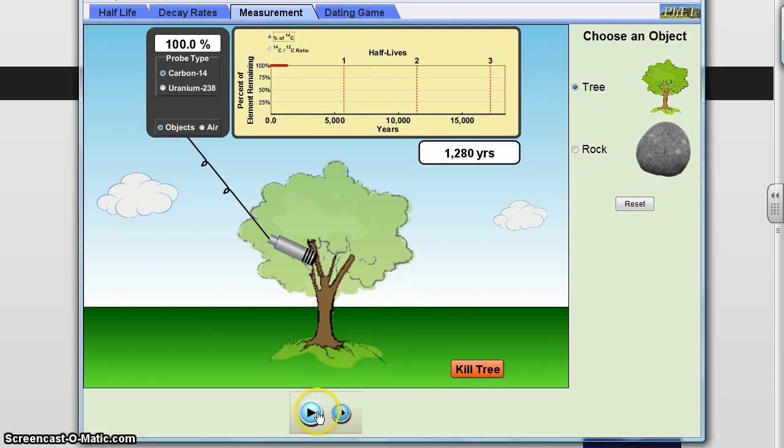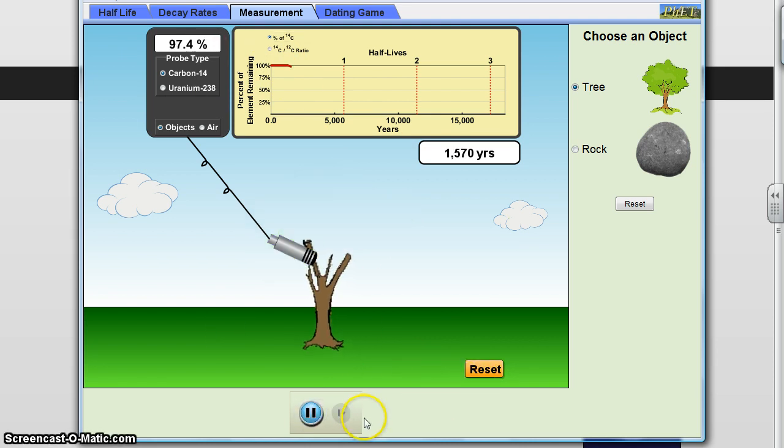So, basically, of that trillionth of a percent that it could have, it has all of it still there. And so, what's going to happen is we're going to let it go. We're going to let it go. You can see we're going to eventually we're going to kill the tree. And now the tree is dead and it's falling over. Goodbye, Bob. And what happens is that Carbon-14, while the tree was alive, was going into and out of the tree.